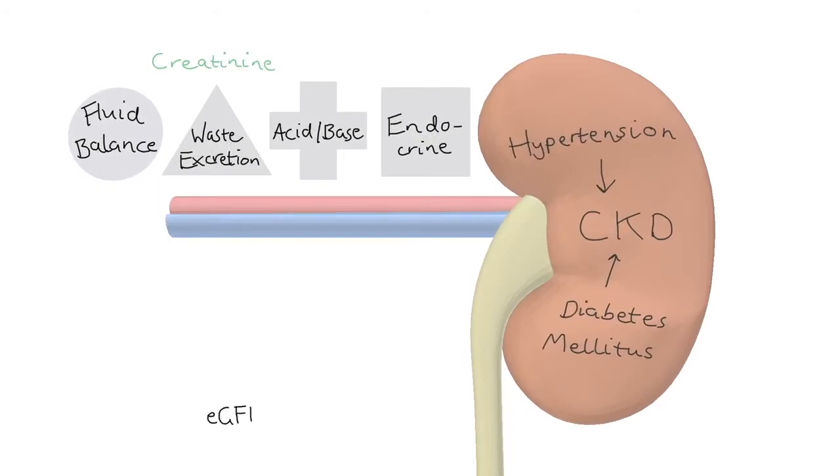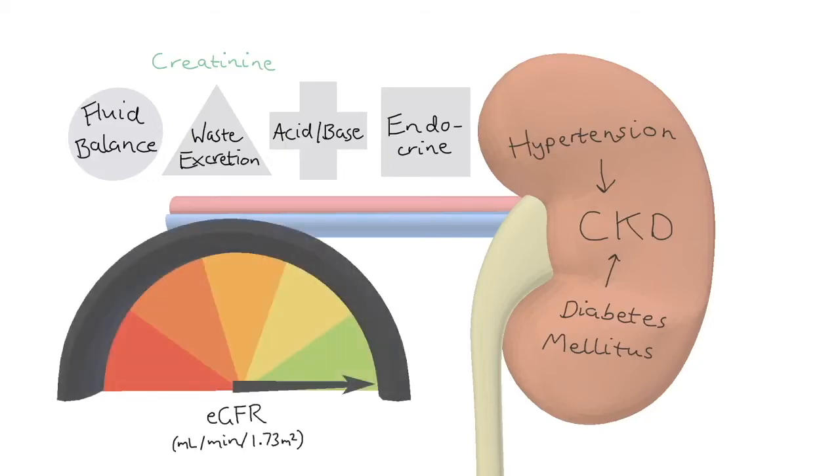We then get a value called the Estimated Glomerular Filtration Rate, or eGFR. The units for that are mL per minute per 1.73 meters squared. This allows us to stage the disease on our GFR meter here.